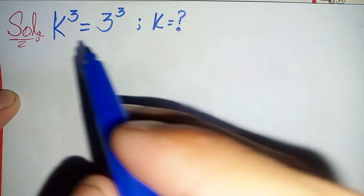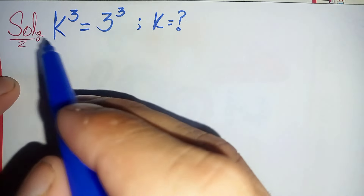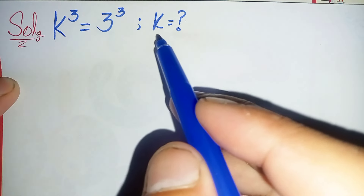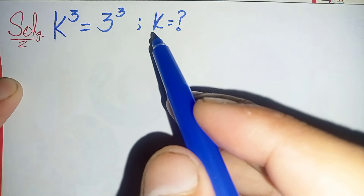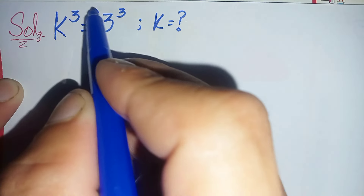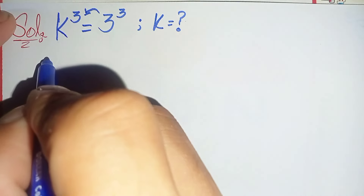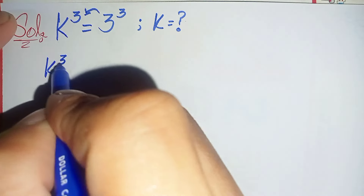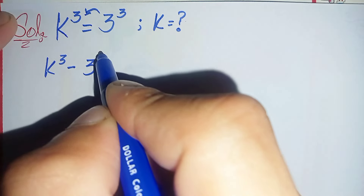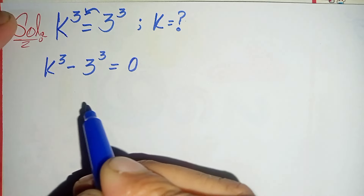Hello everyone. How to solve this nice cubic equation: k cubed is equal to 3 cubed. Here we will try to find the value of k. First, we will move 3 to the power 3 to the left hand side, so this will become k cubed minus 3 cubed is equal to zero.